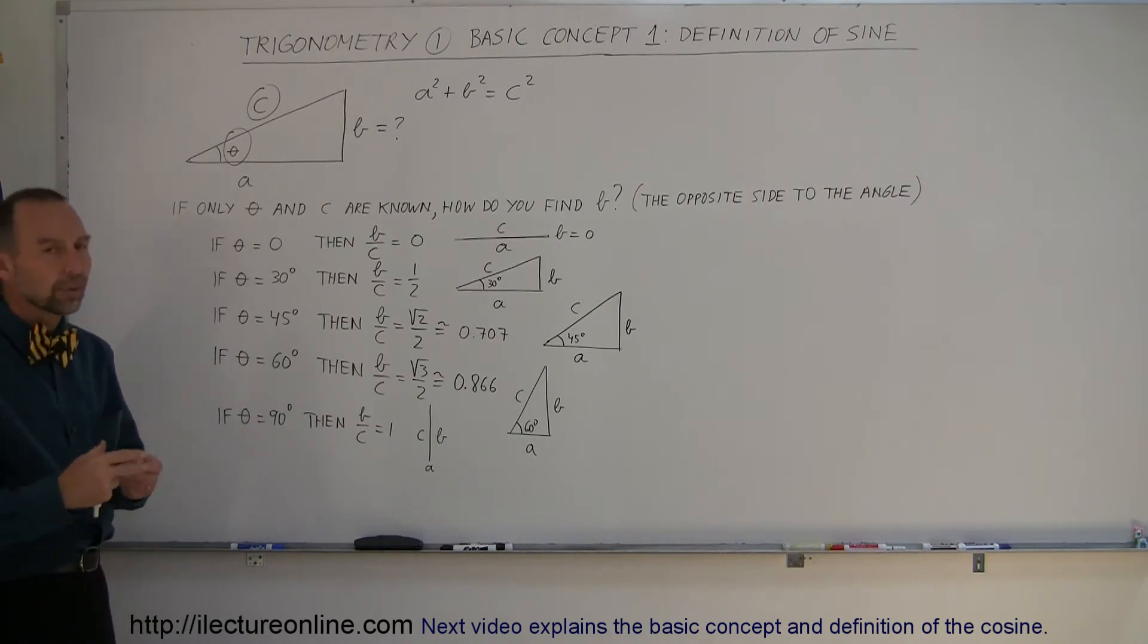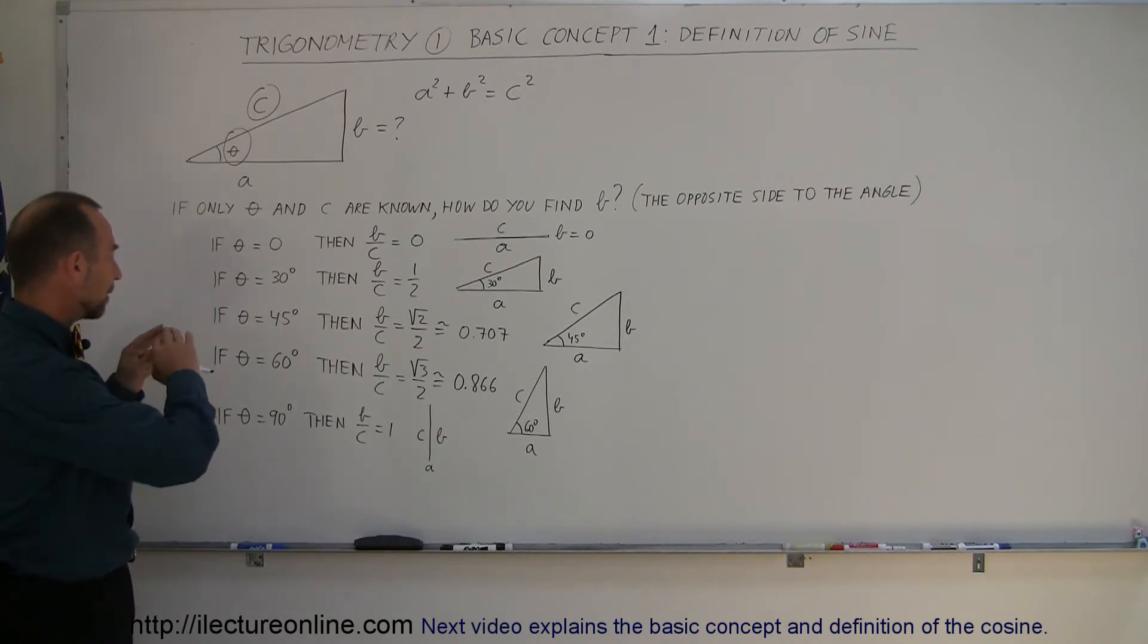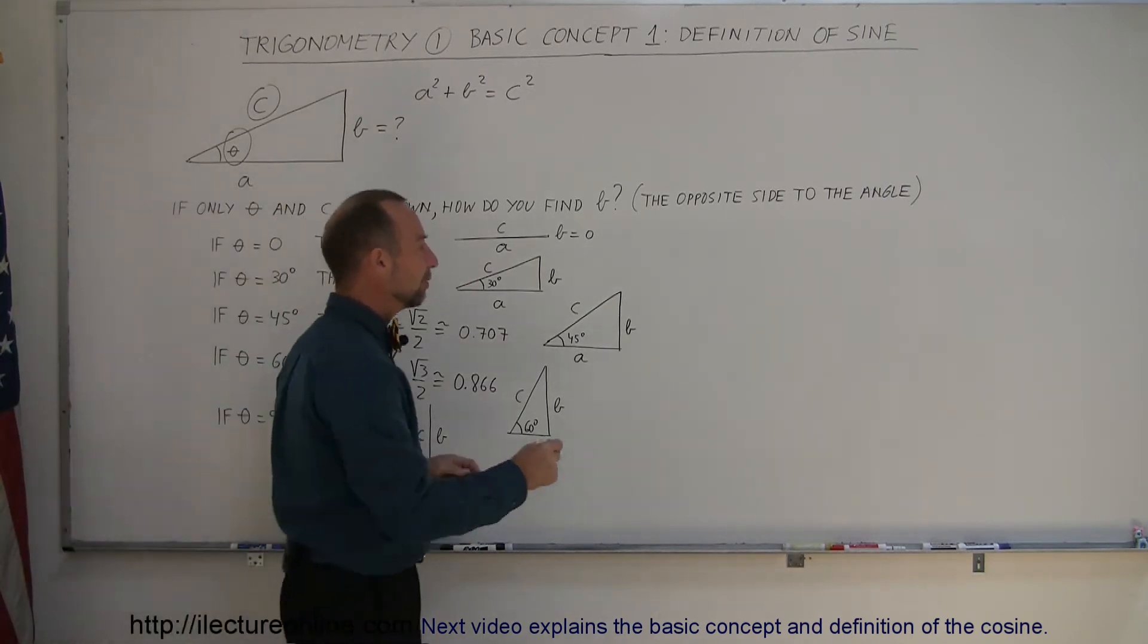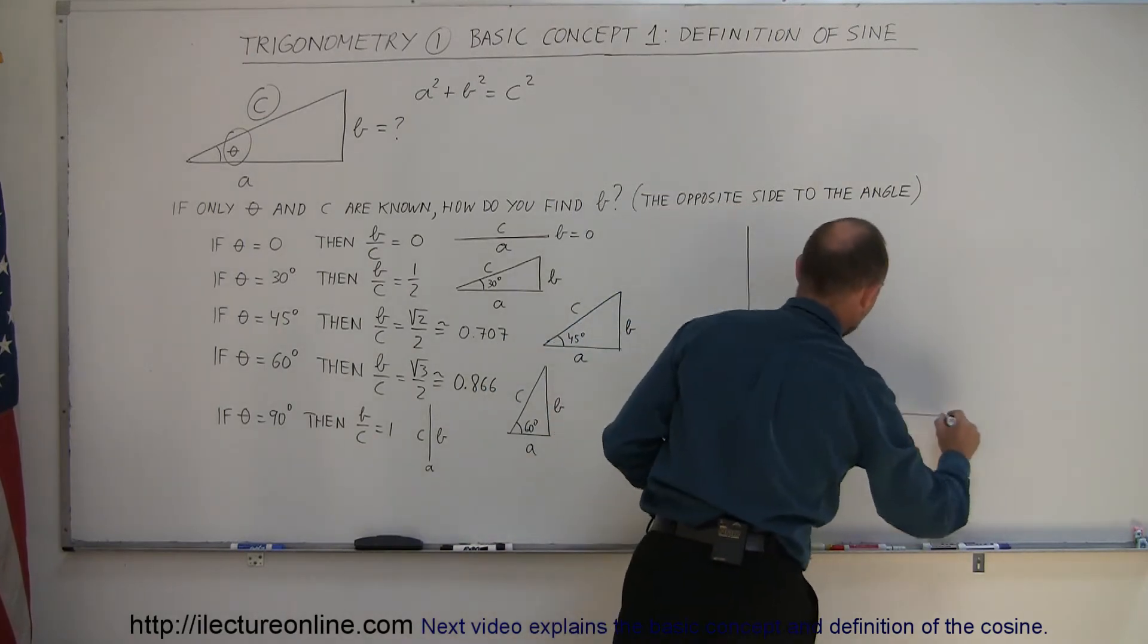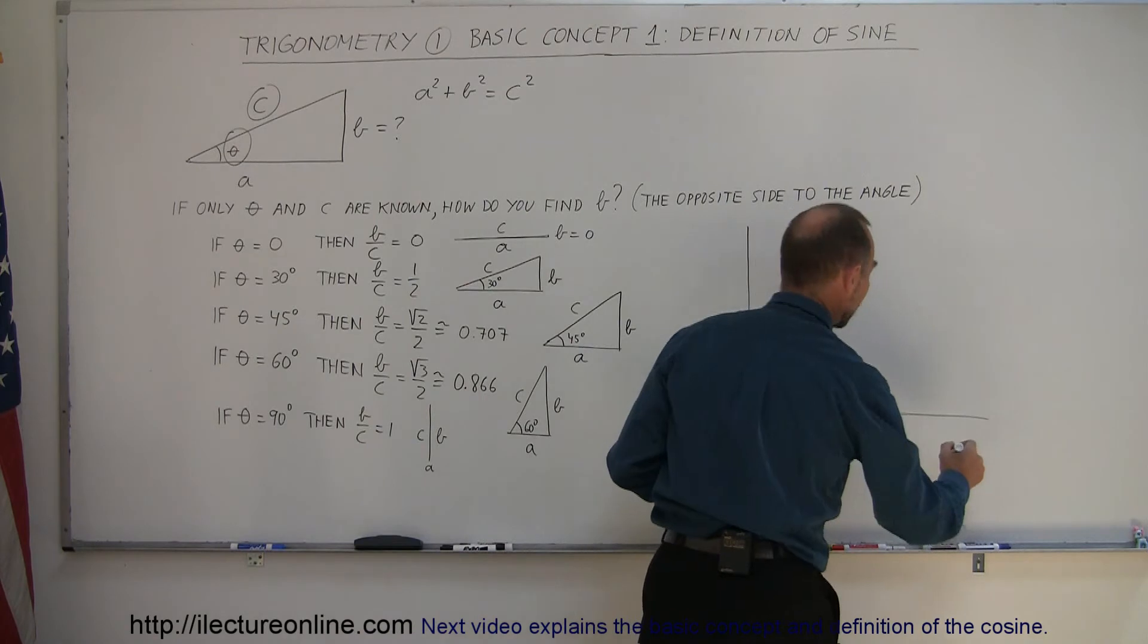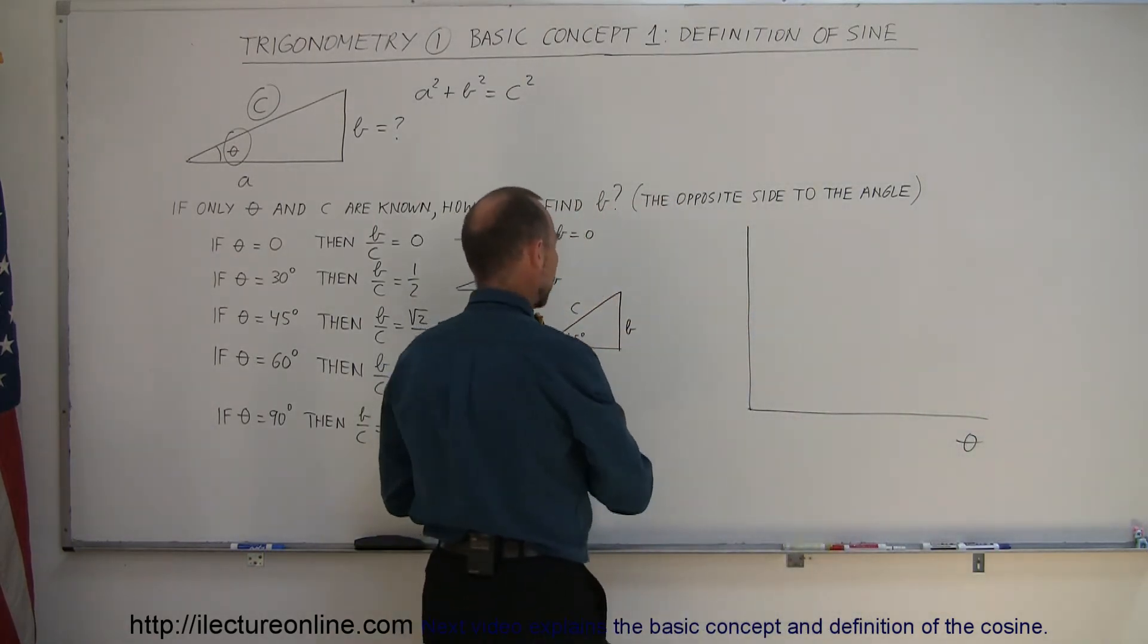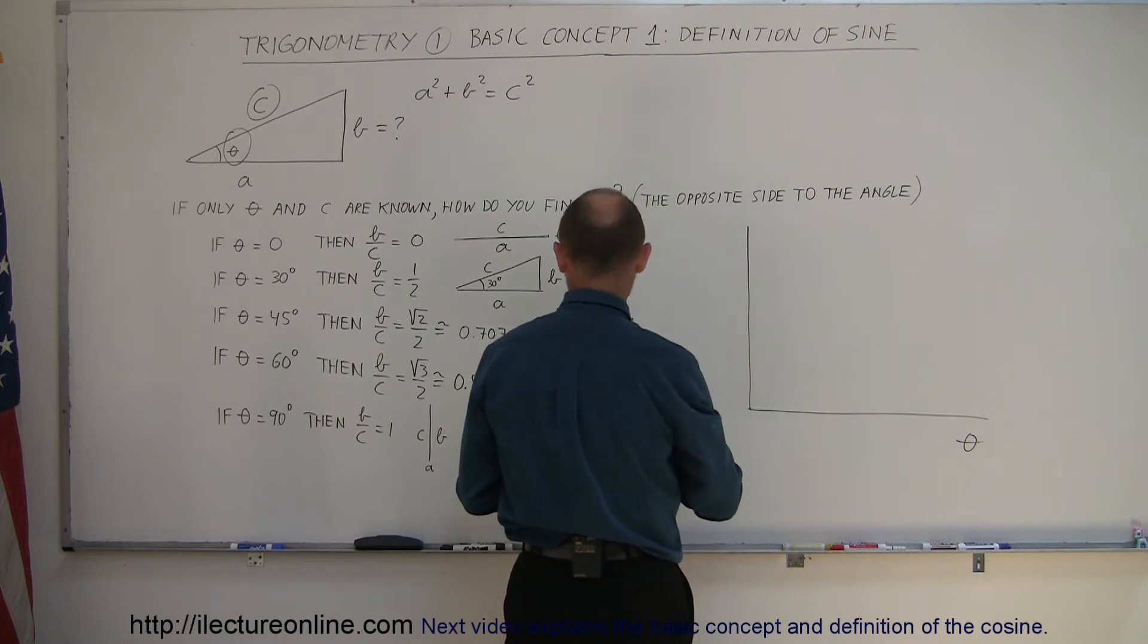How do we make use of that? Well, somebody very clever said they can make that into a function. If we go ahead and imagine a function, a relationship, because that's what usually a function is, it's a relationship between the angle and the ratio of B to C.